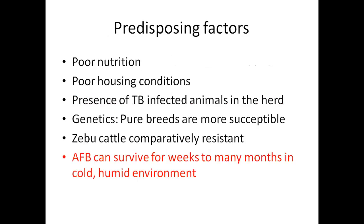What are the predisposing factors which put animals at risk of bovine tuberculosis? The first is poor nutrition — if the animal is not properly fed, it becomes stressed and the immune system doesn't work properly. Similarly, poor housing conditions, presence of TB-infected animals in the herd, and genetics are important factors that put healthy animals at risk of acquiring Mycobacterium bovis.